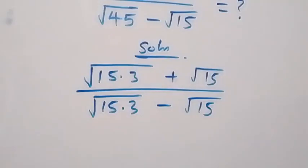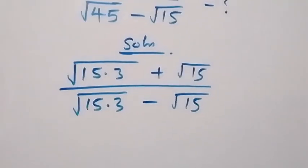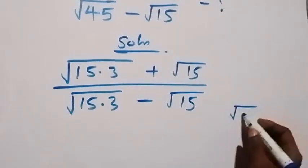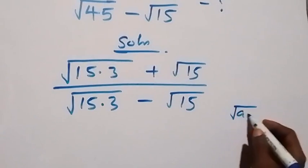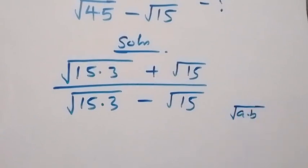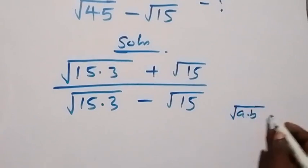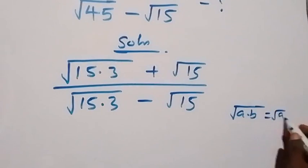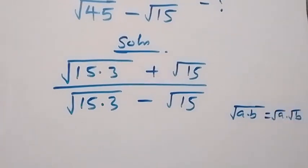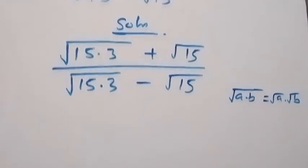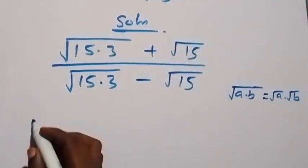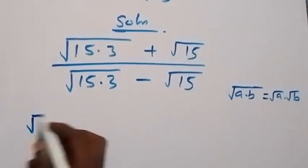From here we can rewrite this: we have root(a × b), which is the same as root a times root b. So when we apply this rule here, it implies that what we have now can be written using that product rule.